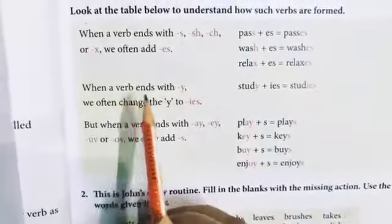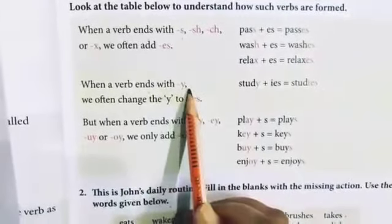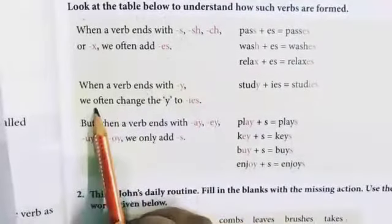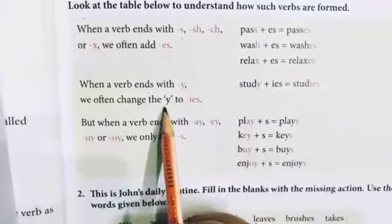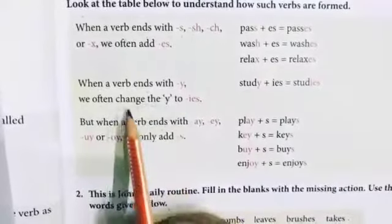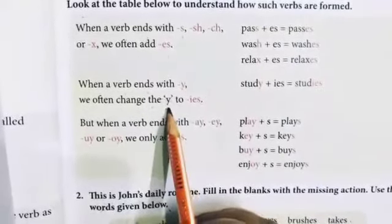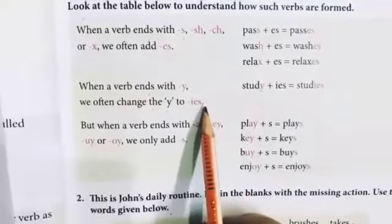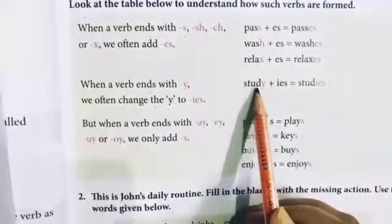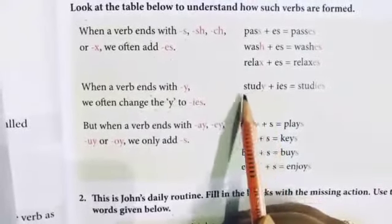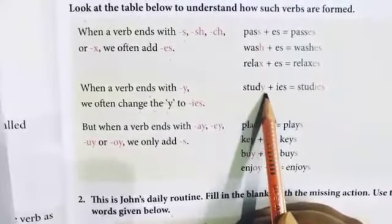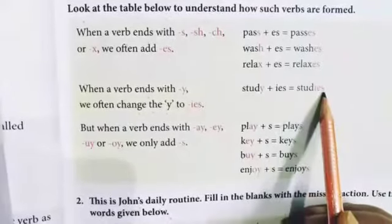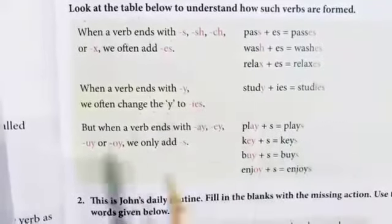When a verb ends with Y, we often change the Y — that means we remove Y and add IES. For example, study: S-T-U-D-Y — we remove Y and add IES — studies.